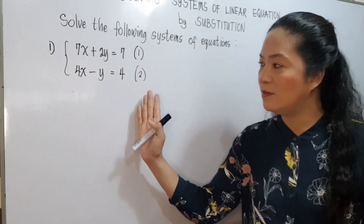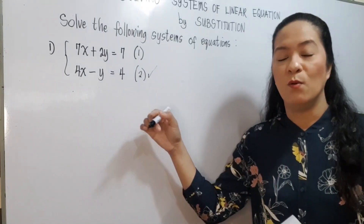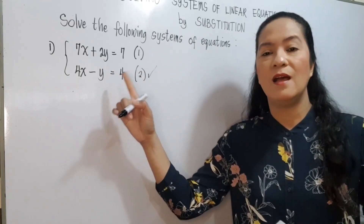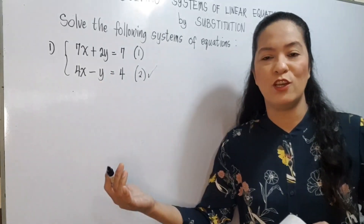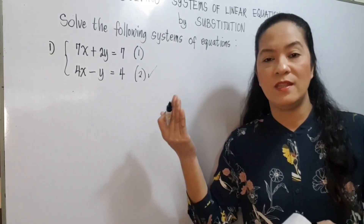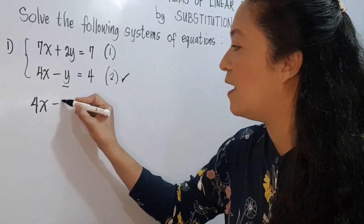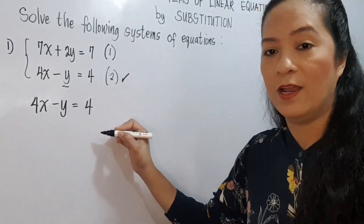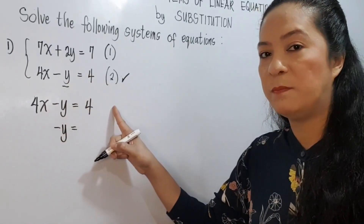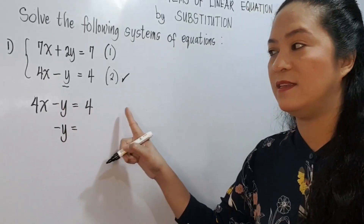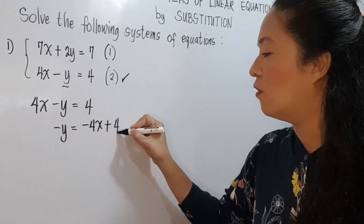Here, obviously, we choose equation 2. Why? Because we have a variable whose coefficient is 1 or negative 1. We choose the equation which has a variable with a coefficient of 1 or negative 1. So we write 4x minus y equals 4, and we are going to solve for y. Negative y is equal to negative 4x plus 4.